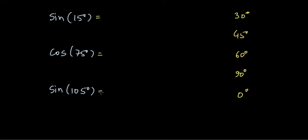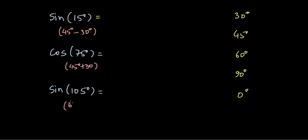If we look closely, 15 can be represented by 45 minus 30. 75 can be written as 45 plus 30, whereas 105 can be written as 60 degrees plus 45 degrees. These are all standard angles for which we know the trigonometric ratios. So when we want to find the sine or cos of such angles, we make use of a formula.